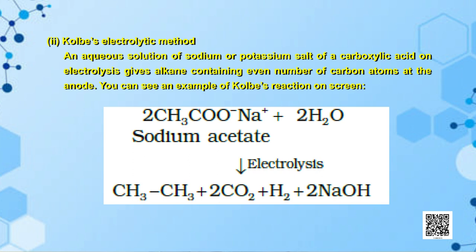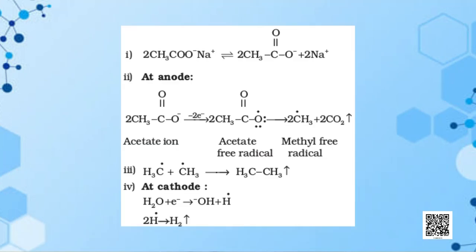In Kolbe's reaction, sodium acetate is a strong electrolyte which completely dissociates into acetate and sodium ions in water. On electrolysis of aqueous sodium acetate, the acetate ion gives off an electron at the anode, thereby forming an acetate free radical, which is unstable and converts to a methyl free radical while releasing carbon dioxide gas. Two methyl free radicals then combine to form ethane. At the cathode, water accepts an electron, releasing hydrogen gas. Therefore, it is clear that methane cannot be prepared by this method.